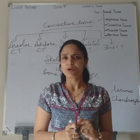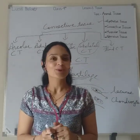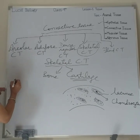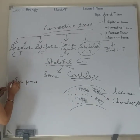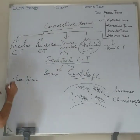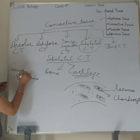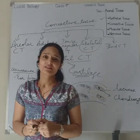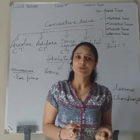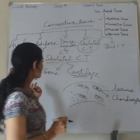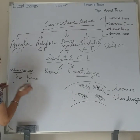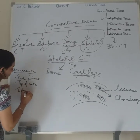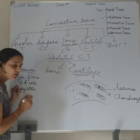Now, where do you find cartilage in the body? Have you ever thought about how you are able to twist your ear? Your teacher or parents might have twisted your ear — that is possible because of cartilage. So discussing the occurrence or location of cartilage: it is found in the ear pinna and also at the tip of the nose.